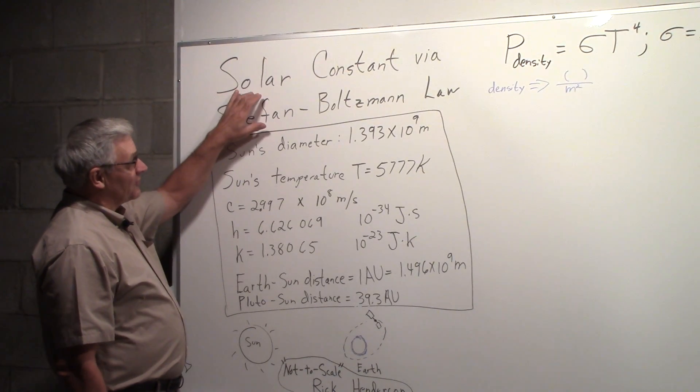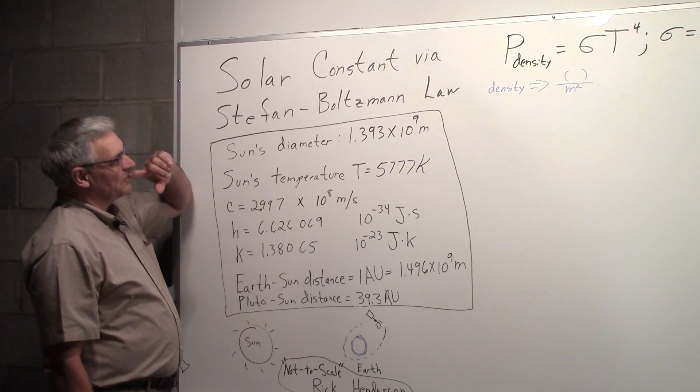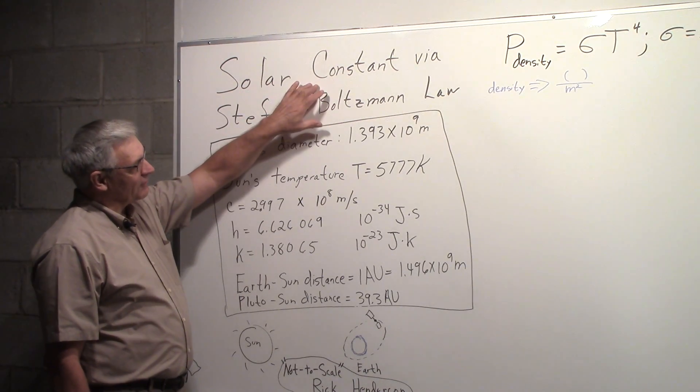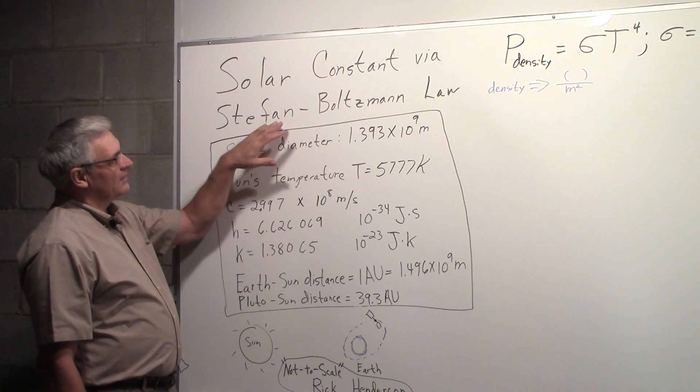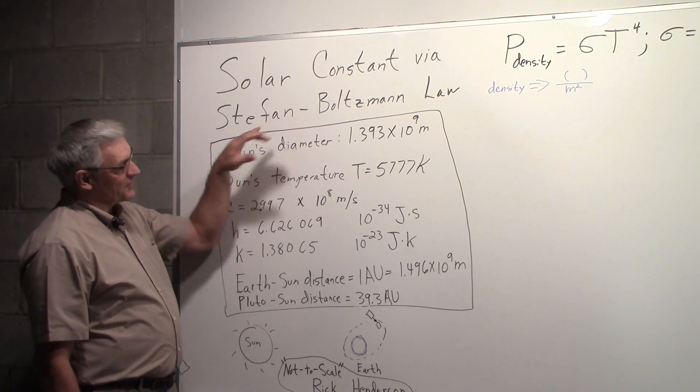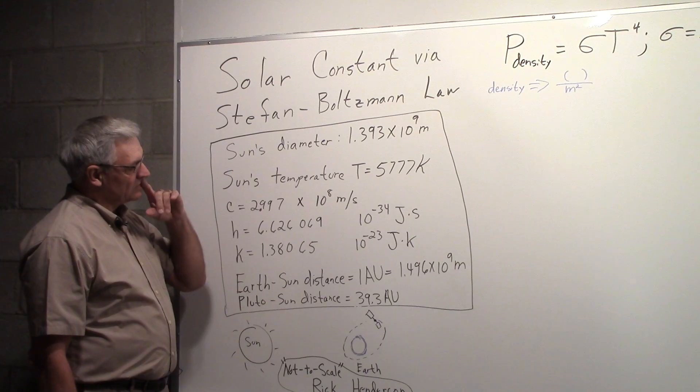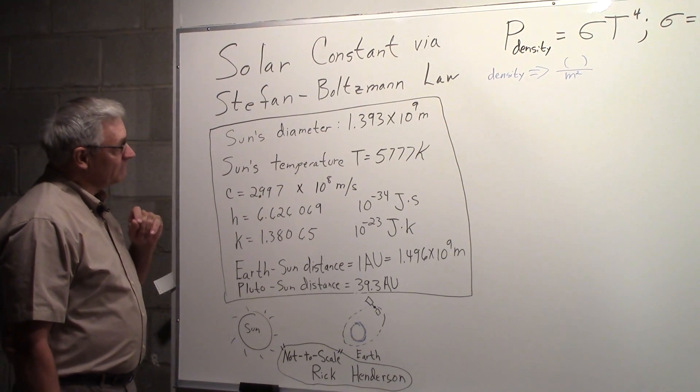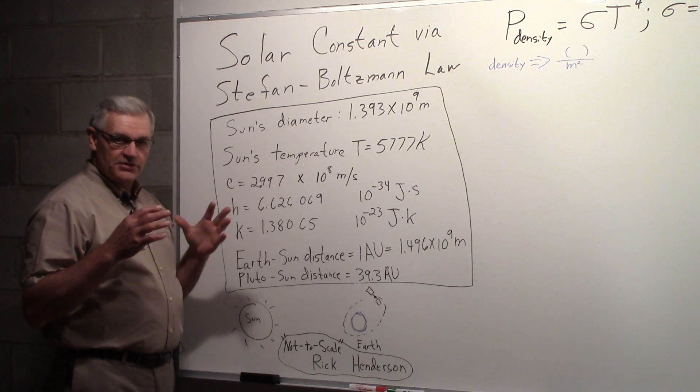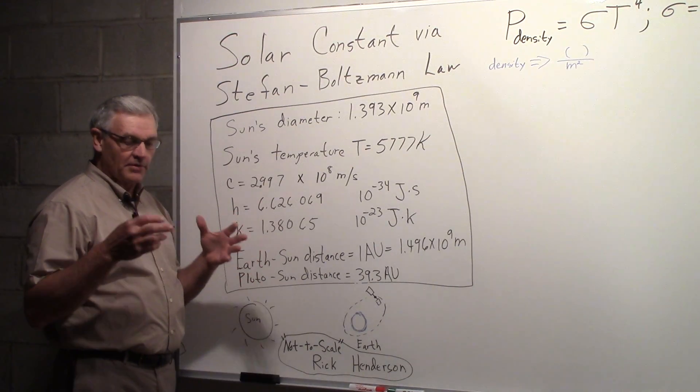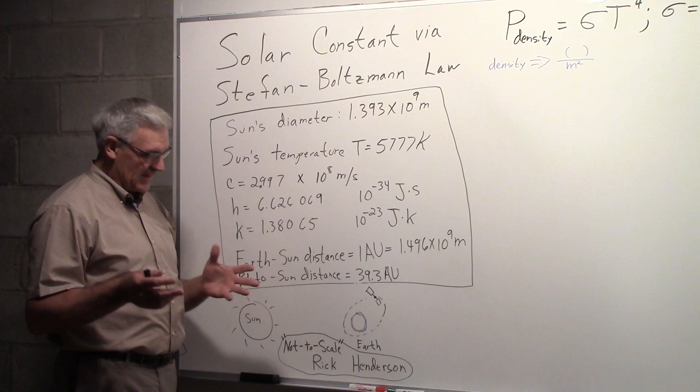All right, we want to talk about the solar constant, and we'll talk about how to derive the solar constant at the Earth from the Stefan-Boltzmann law. The solar constant will tell us how much power is available per square meter of surface at the Earth.